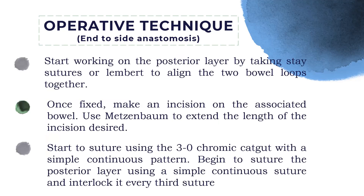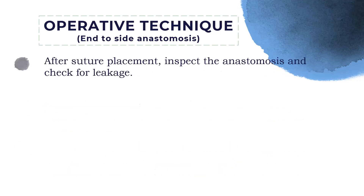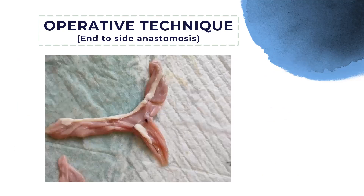For the end-to-side anastomosis, start working on the posterior layer by taking stay sutures or Lembert sutures to align the two bowel loops together. Once fixed, make an incision on the associated bowel and use Metzenbaum scissors to extend the length of the incision as desired. Start the suture using 3-0 chromic gut with a simple continuous pattern, interlock it every third stitch to secure the contents of the intestine and prevent leakage. After suture placement, inspect the anastomosis and check for leakage.